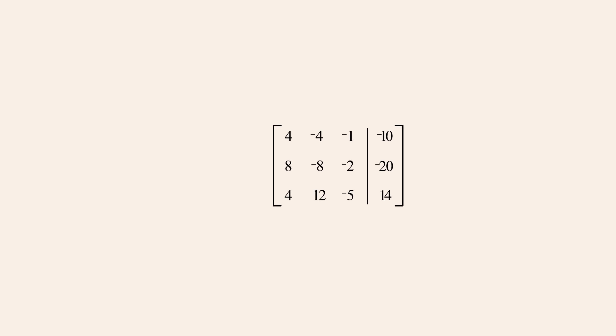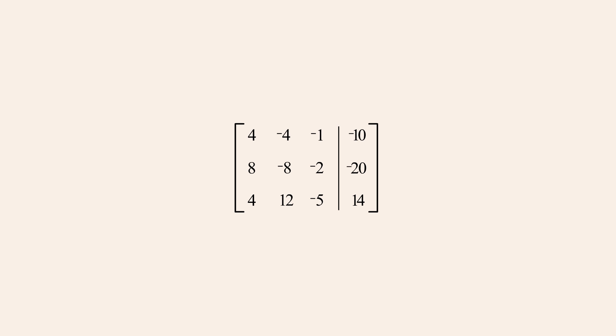So let's use Gauss-Jordan elimination to transform this matrix to reduced row echelon form. We start by changing the first row's leading entry to a one using a scale operation to multiply row one by one-fourth.